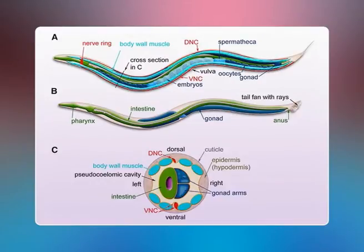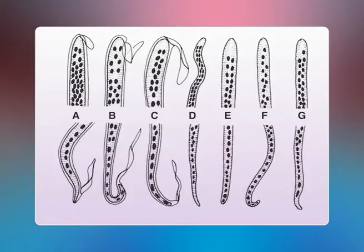In the anterior half of the microfilaria, there is an oblique area devoid of granules called the nerve ring. Approximately midway along the length is the anterior V-spot, representing the rudimentary excretory system. The posterior V-spot represents the cloaca or anal pore. G-cells or genital cells number 4 (G1 to G4) and are situated anterior to the anal pore. The internal body of Mason extends from the anterior V-spot to the G-cells and represents the rudimentary alimentary canal. The lifespan of microfilariae in human blood can be up to 70 days.